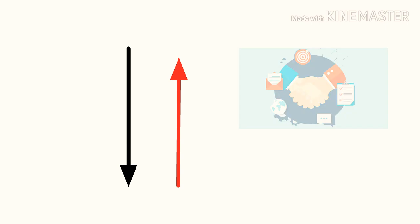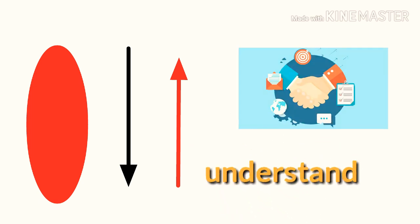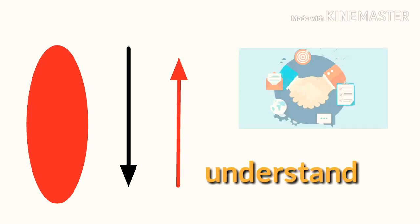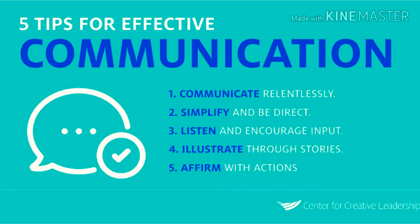Then comes the channel, which is the carrier of the message. This can be telephonic, email, letter, face-to-face, etc. The receiver is the person to whom the communicator directs the message — the one who gets the message. It is very important for the sender to understand the receiver's ability and interpretation capacity for effective communication. The next step is the decoding of the message by the receiver.